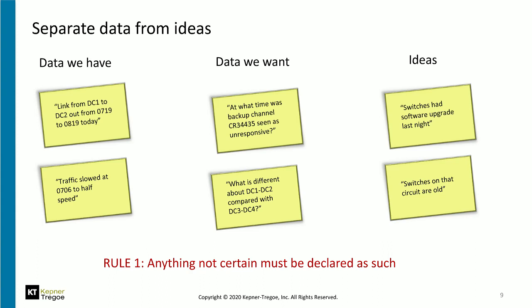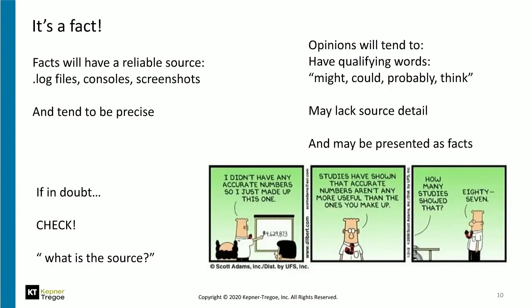Look for data that you know for sure, then separately note ideas about that data. For example: 'Switches had the software upgrade last night' — we don't yet know whether that upgrade ran successfully or not, and it may or may not have something to do with the cause. 'Switches on that circuit are old' — again, people are suggesting that as a possible cause, and that's fine, just so long as we separate data we know for sure from ideas.